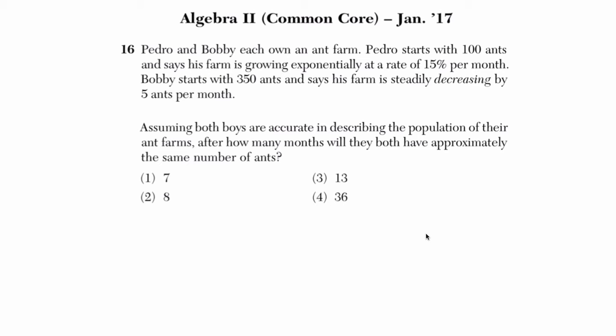Okay, so we've got these two people. We've got Pedro and Bobby, and they're growing an ant farm. Pedro starts with 100 ants. Okay, so I'm going to write this down before I get confused. Pedro, I think, I looked down here at a glance, it's based on months. So Pedro's ants is based on the number of months. I'm going to assume that's what our equation is. It starts with 100 ants, and is growing exponentially at a rate of 15% per month. So that's times 1.15 to the m.